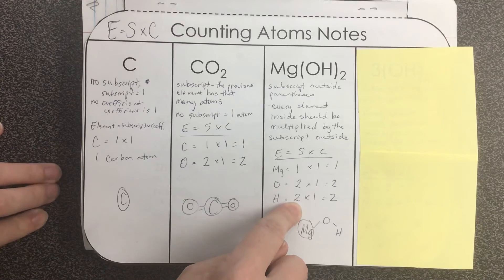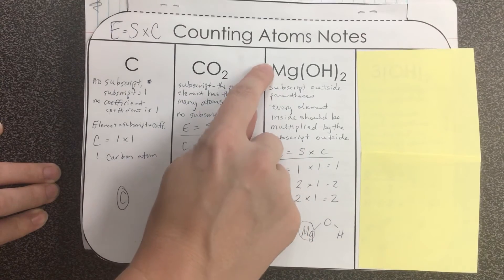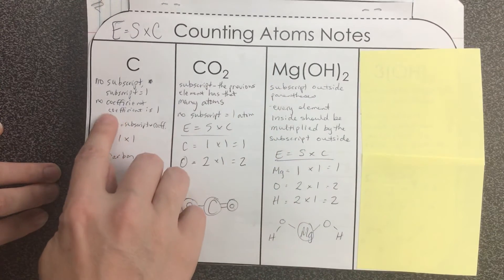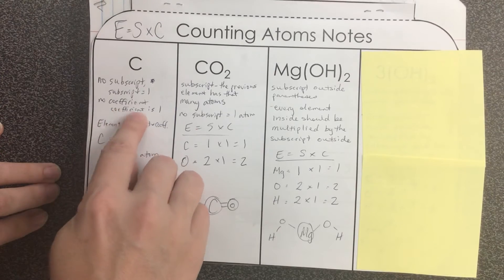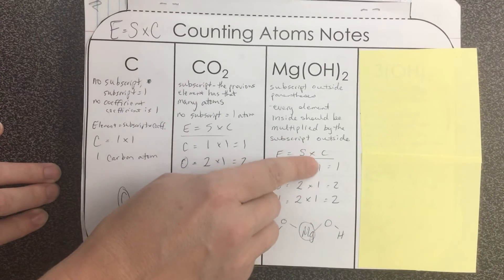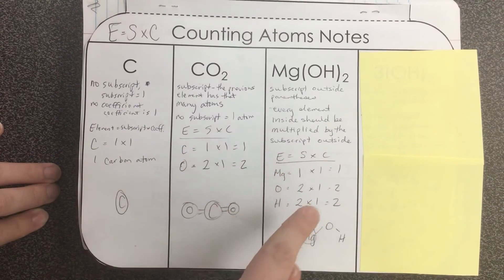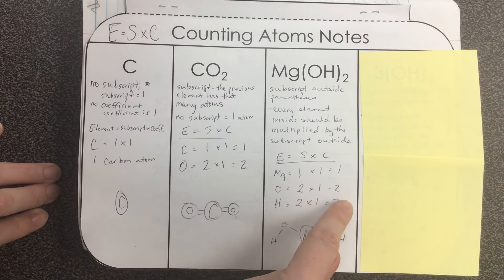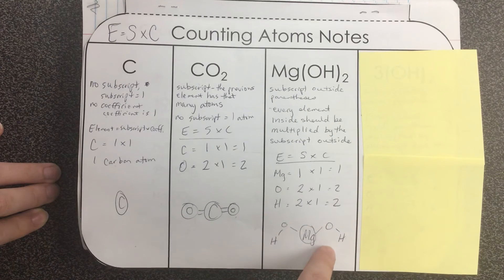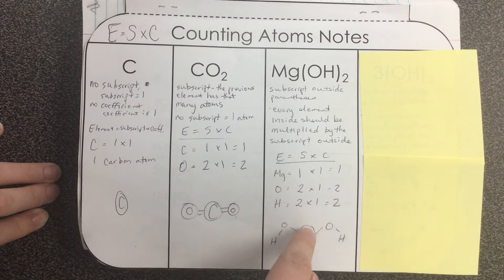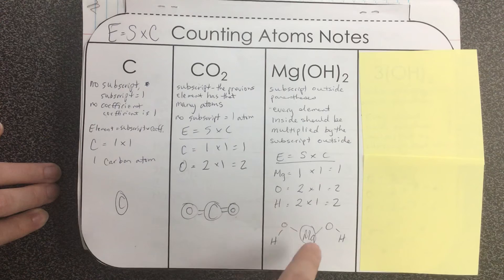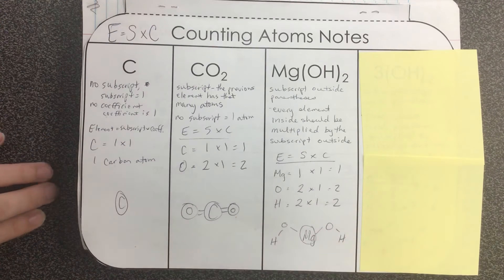The coefficient, there is none. So as we learned from this first column, if there is no coefficient, the coefficient is one. So we'll multiply all these by one to get one magnesium atom, two oxygens, and two hydrogens. And what this is going to kind of look like in real life is magnesium with two OH groups coming off the sides.